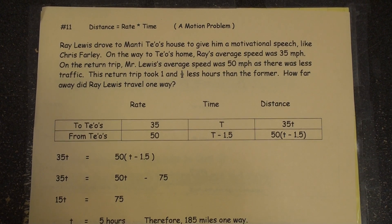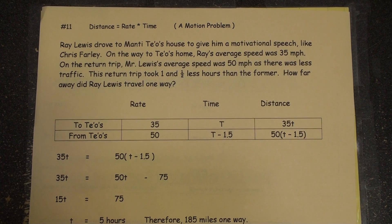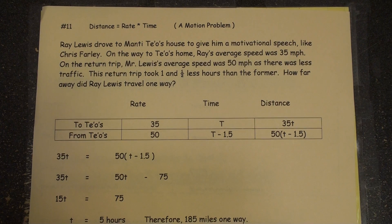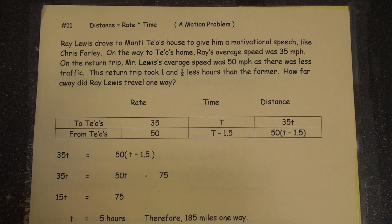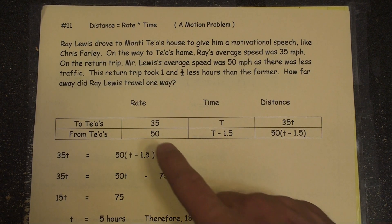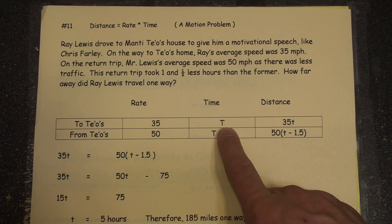Rate times time equals distance. You set up two different situations: to Te'o's and from Te'o's home — yes, there are two apostrophes in there because his name has one apostrophe. Rate times time equals distance. There's the speed for on the way to his house, and the time we just call T.